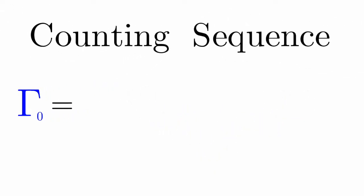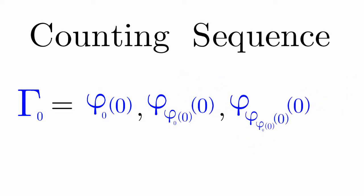The counting sequence for gamma nought is equal to phi zero of zero, phi of phi zero of zero, phi of phi of phi zero of zero, and so on.